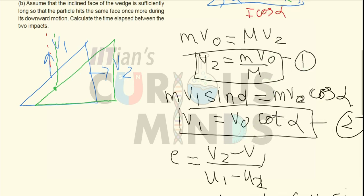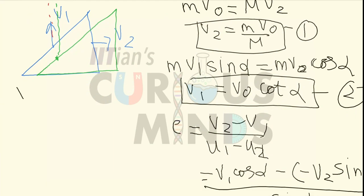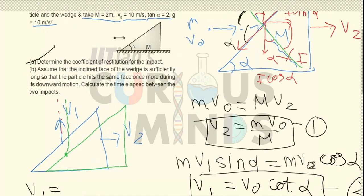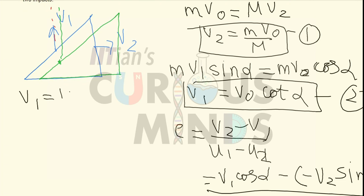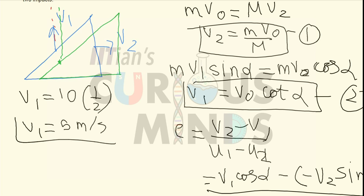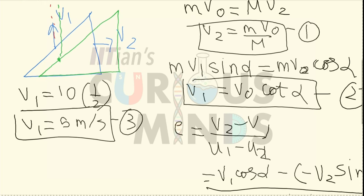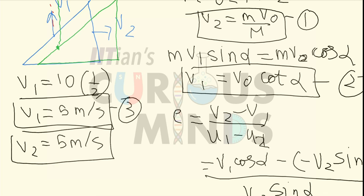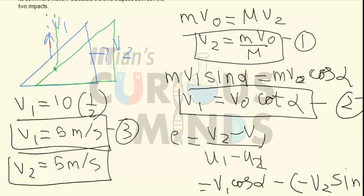Let us find the numerical values of V1 and V2. V1 = V0·cot(α) = 10 × (1/2) = 5 m/s vertically upward. V2 = (m/M)·V0 = (1/2)·10 = 5 m/s horizontally, and it remains constant since the floor is smooth.